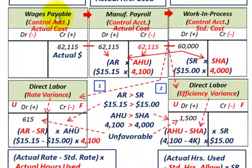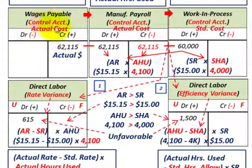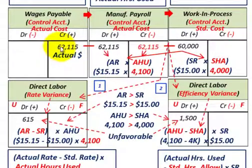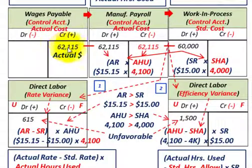Let's start with our wages payable — this is a control account at actual cost. For the month on this project, we accumulated wages payable of $62,115.